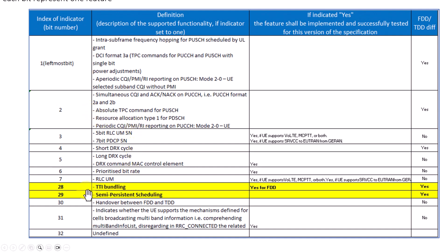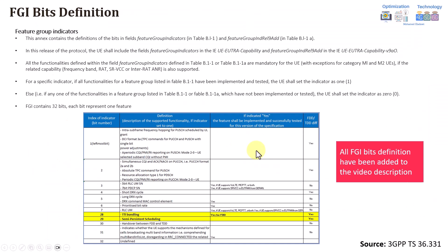This table is quoted from 3GPP TS 36.331, showing all the bits under the FGI or Feature Group Indicator, each bit explaining which feature it addresses. For example, bit 28 is for TTI bundling — if bit 28 is 1, the user supports TTI bundling; if 0, it does not. Same for bit 29 for semi-persistent scheduling. The complete explanation for all 32 bits will be attached in the video description for your reference.